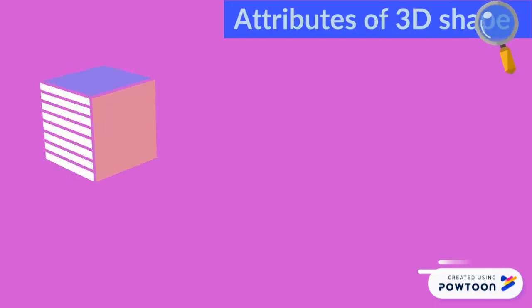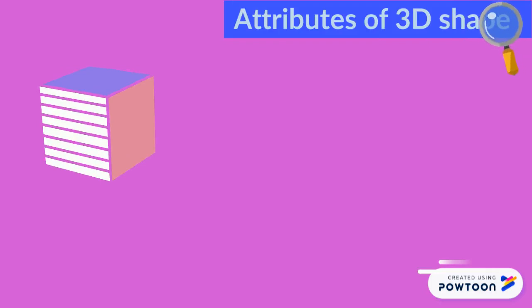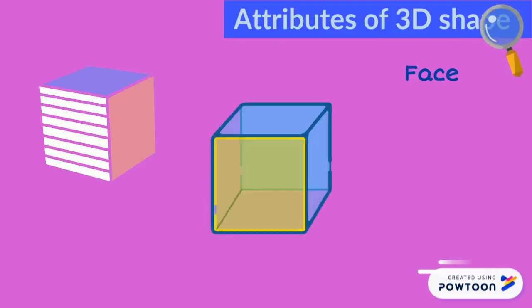Let us look at some of the attributes of the 3D shapes. The first attribute is the face. The flat surfaces of the shape are called faces.